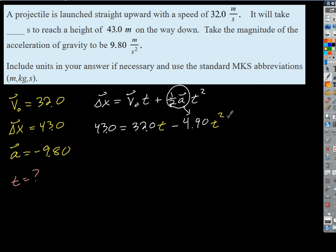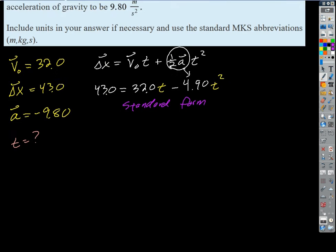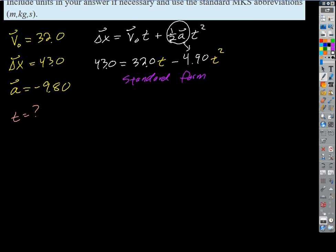Okay, so we've got to solve this thing, right? So now this is a quadratic equation. Let's push everything over to the left so we get a positive coefficient of t squared. So we're going to put this into standard form. So in standard form then we've got positive 4.90 t squared minus 32.0 t plus 43.0 equals zero, right?